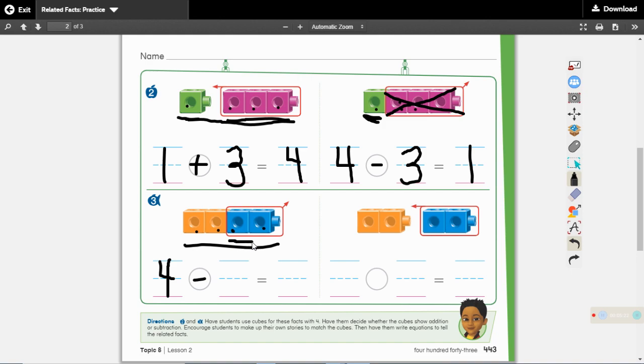How many squares right here are being taken away? 2. 2 are being taken away. And how many squares are left over over here? 2. 4 minus 2 is 2.